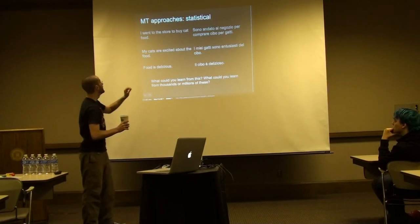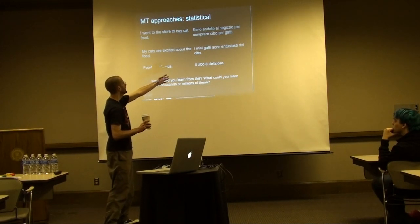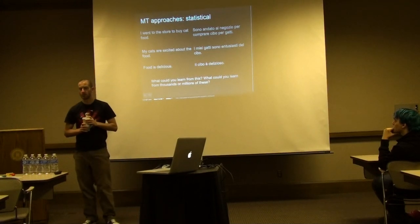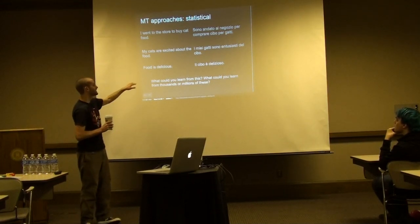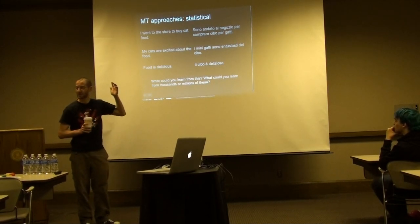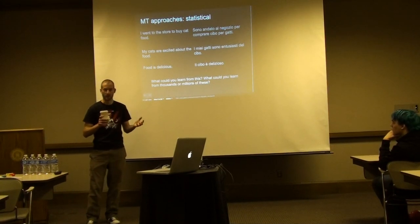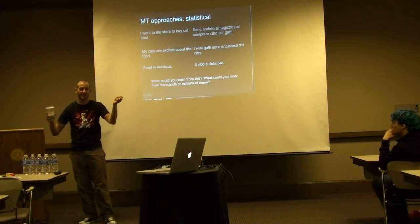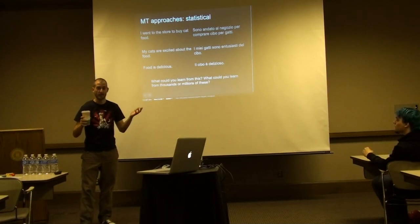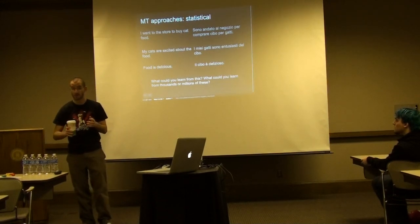Just to give you an intuition: here's some English and some Italian. Can you find some trends? Given that a sentence talks about food in English, what word do you always see in Italian? 'Cibo.' So if you're a statistical MT system, you could imagine it learning: if you've got a sentence in English with the word 'food,' then the probability of having the word 'cibo' on the Italian side is basically 100%. If you had thousands, hundreds of thousands, millions of sentences — you could learn all the words.